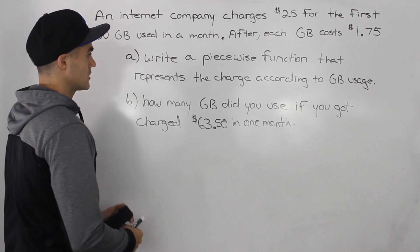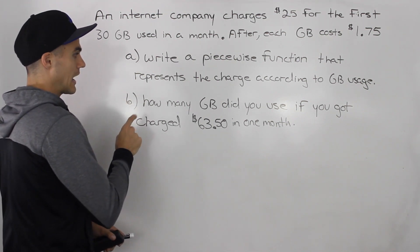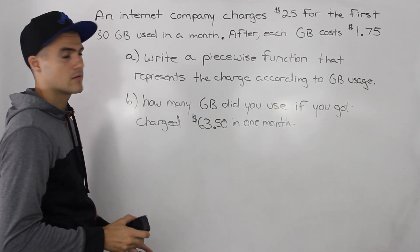So an internet company charges $25 for the first 30 gigabytes used in a month. After each gigabyte costs $1.75 after that 30 gigabyte usage. Part A, write a piecewise function that represents the charge according to gigabyte usage. Part B, how many gigabytes did you use if you got charged $63.50 in one month?